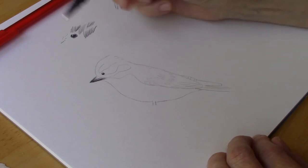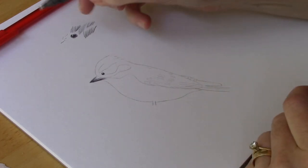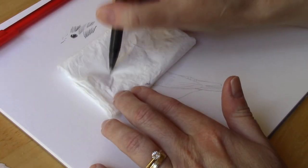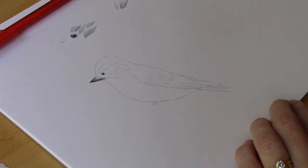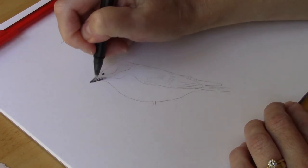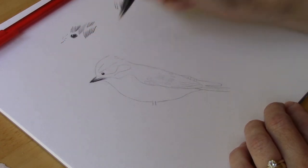If you happen to have a pen that blobs at the end, you can just get a tissue, have your pen on the tissue, and it will remove that excess blobby ink so you don't get a splotch.